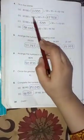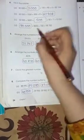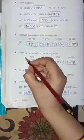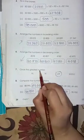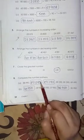Next page, which is page number 24. Again, you have to fill in the blanks. Arrange the numbers in increasing order, means from the lowest to the highest. Circle the greater number in Roman numerals. Complete the number pattern.